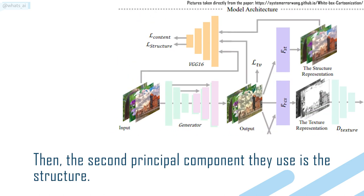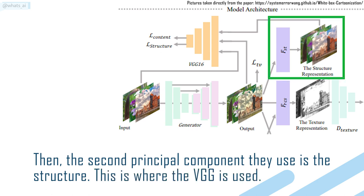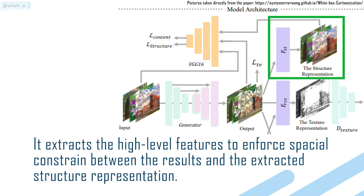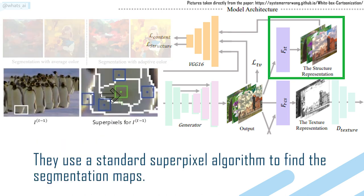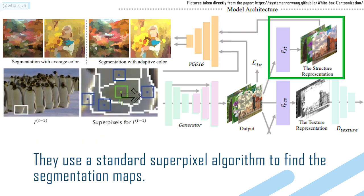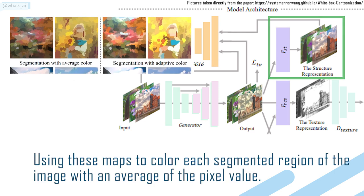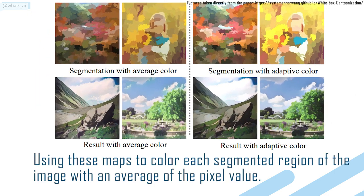The second principal component they use is the structure. This is where the VGG is used — it extracts the high-level features to enforce spatial constraints between the results and extracted structure representations. They use a standard superpixel algorithm to find the segment maps, using these maps to color each segmented region of the image with an average of the pixel value.